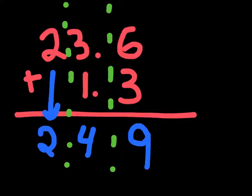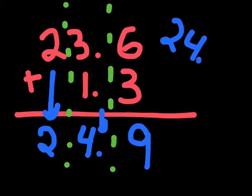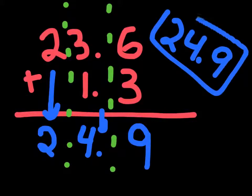So, we know, and then we have to remember that we bring down the decimal point. So, our answer to 23.6 plus 1.3 is just 24.9. That's it. So, let's do one more problem.